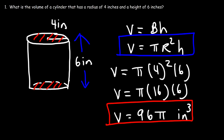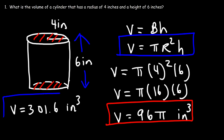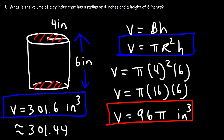Taking 3.14159 multiplied by 96 gives approximately 301.6 cubic inches. If you use 3.14 times 96 you get 301.44 — so depending on whether you use 3.14 or a more exact value of pi, your answer will differ slightly.